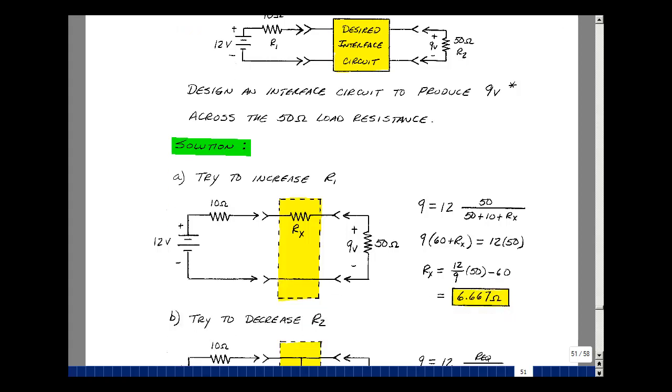Let's call that resistance R sub x. So now our voltage divider is 50 ohms over 50 plus 10 plus R sub x. Cross multiply that, be 60 plus R sub x times 9, and that would equal 50 times 12. Divide through by the 9, subtract the 60, and R sub x is 6.66 ohms.